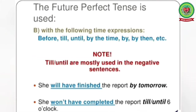Future perfect tense is also used with the following time expressions: before, till, until, by the time, by, by then, etc. Note that 'till' and 'until' are mostly used in negative sentences.